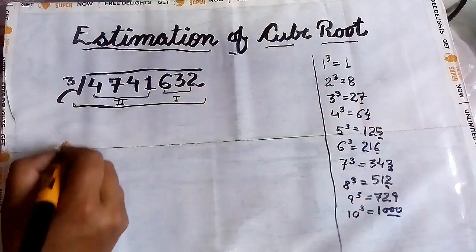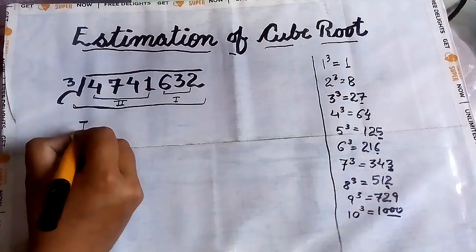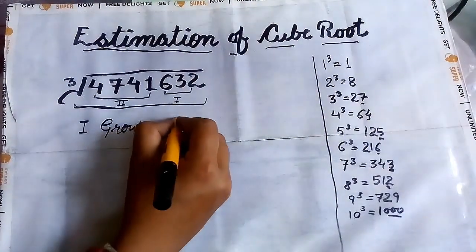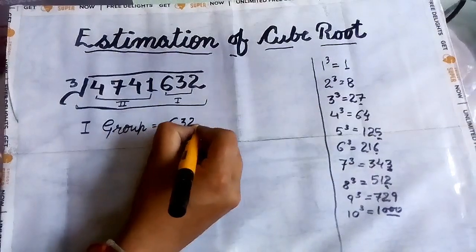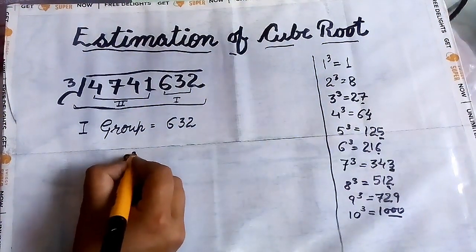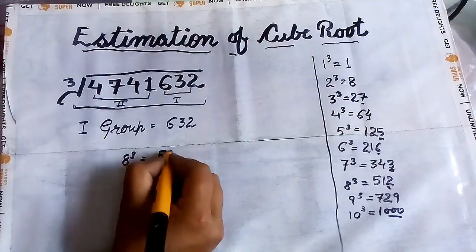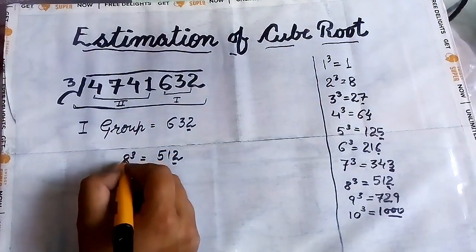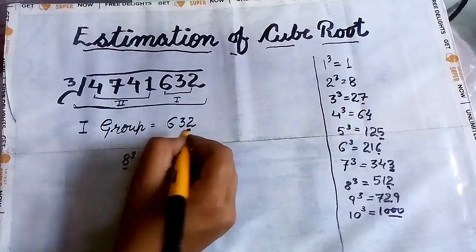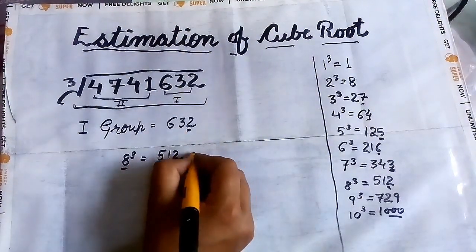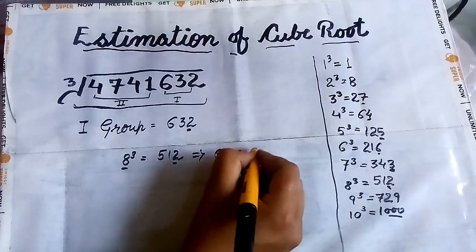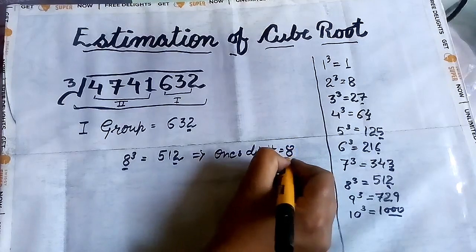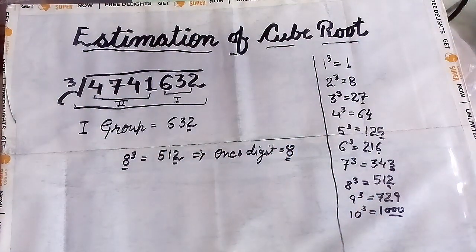Now we have only 2 steps to solve this question. Take the first group, which is 632. We know that 8³ = 512 — both are ending with 2. This means the cube root will end with 8. From here we get the ones digit, that is 8.